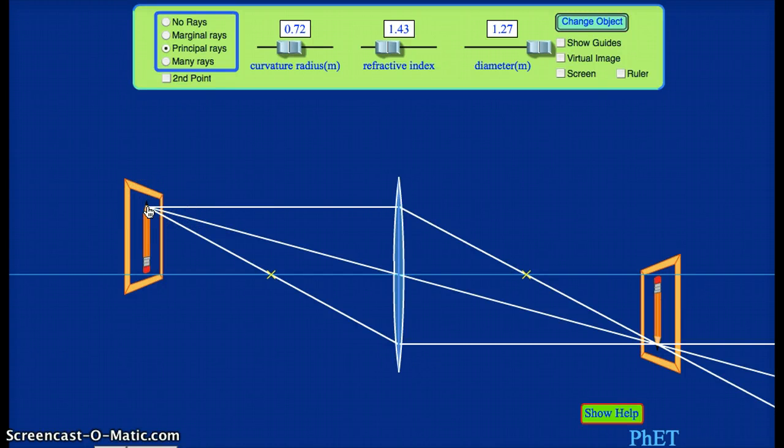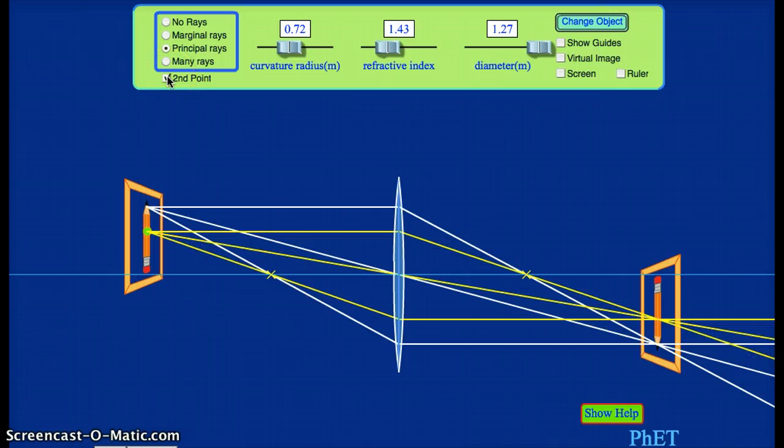And generally we pick the tip of our object to draw these principal rays. But we could do it for any point on our object. And those rays, those principal rays, would converge. They would be the same three principal rays: passing through the outgoing focal point, passing through the middle, passing through the incoming focal point. And those rays would converge, making whatever point on the image that corresponds to the point they came from on the object.